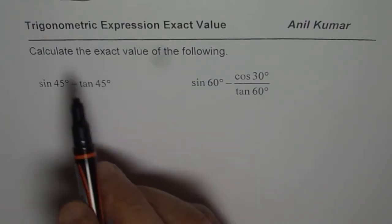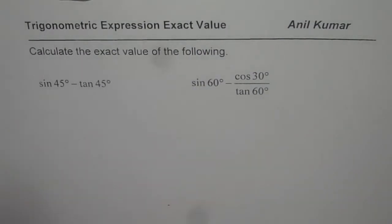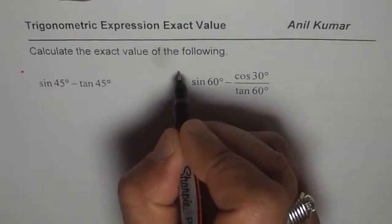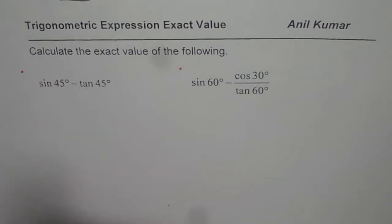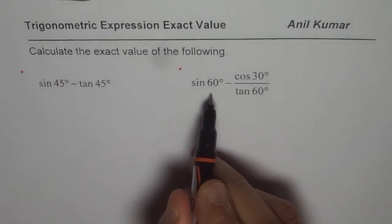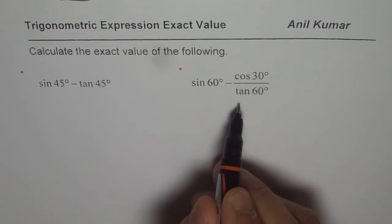So the question here is calculate the exact value of the following. I have taken two examples. First one is sine of 45 degrees minus tan of 45 degrees. The other one is sine 60 degrees minus cosine 30 degrees divided by tan 60 degrees.